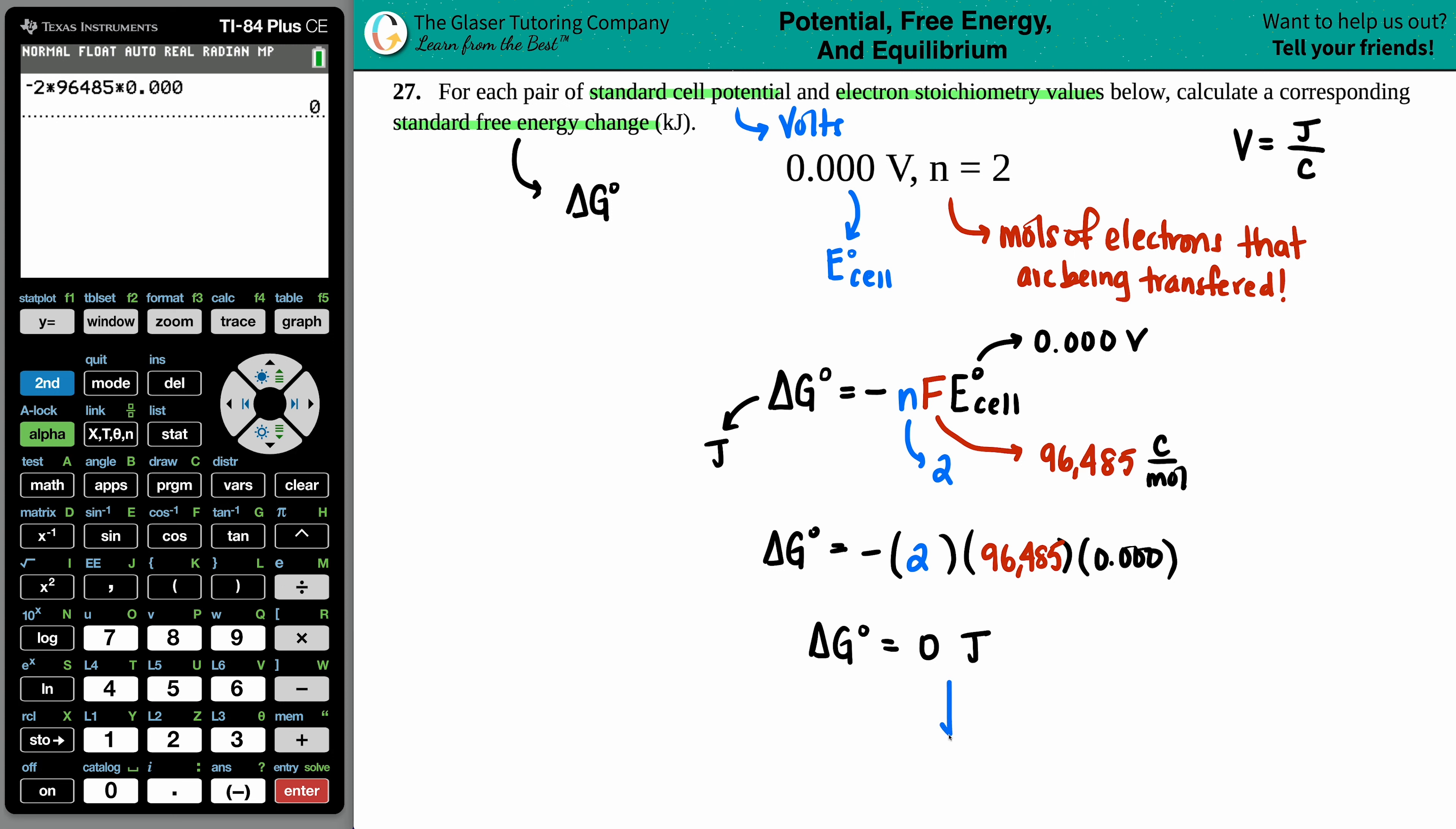They wanted kilojoules. That's okay. Just for practice. Just know that to go from joules to kilojoules, you just have to divide by a thousand, but zero divided by a thousand is still zero. So zero joules, zero kilojoules, final answer.